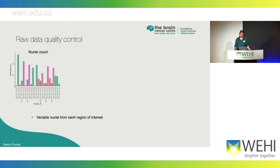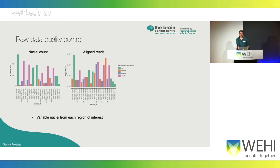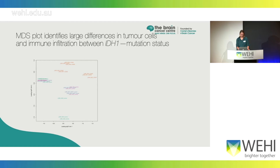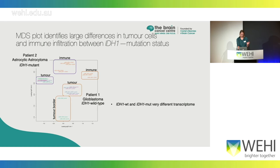The data was analysed by Saskia Freytag, a bioinformatician and co-lead of the lab. We identified quite variable nuclei counts between the different regions of interest, which is understandable given different cell numbers, but we did have quite a high number of aligned reads for all regions. For normalisation, Saskia used the negative binomial distribution of the raw data, which was found to be the best approach. In a PCA plot, the regions of interest associated with the glioblastoma were quite different from those associated with the anaplastic astrocytoma, including the different immune cells pulled out from these regions.